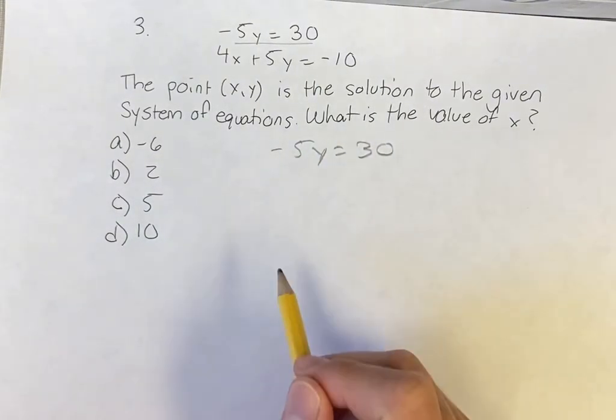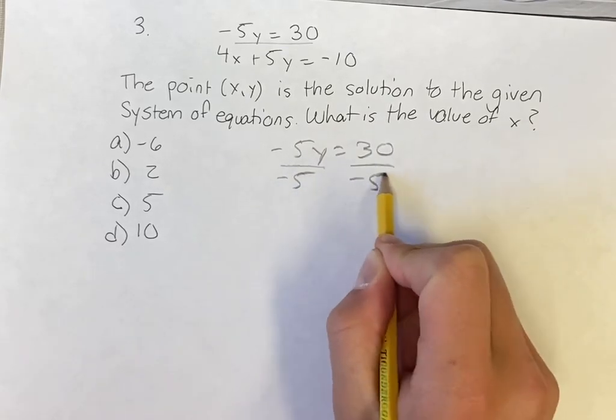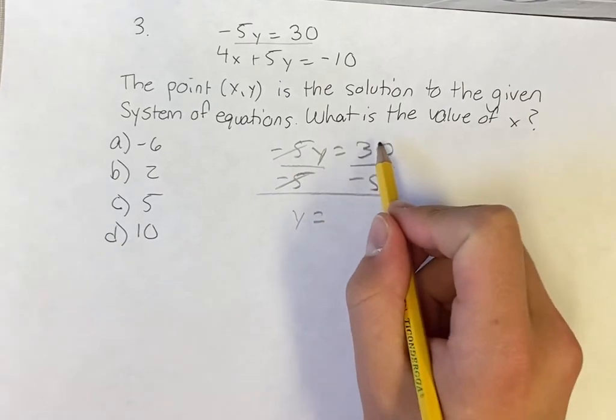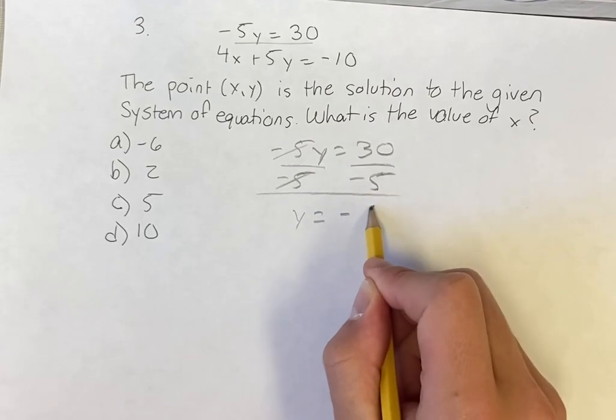But just going about solving for y right now, we want to get it on its own, so if we divide both sides by negative 5, negative 5s will cancel. We're left with y on one side, is equal to 30 divided by 5 is 6, times that negative 1 is going to be negative 6.